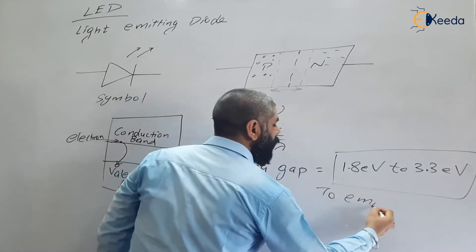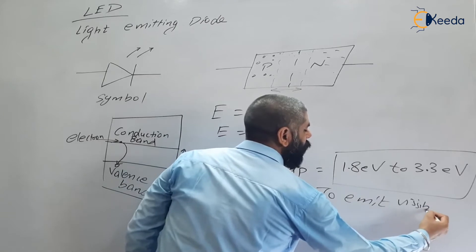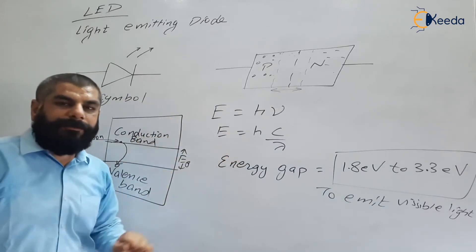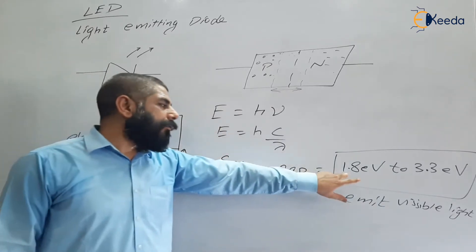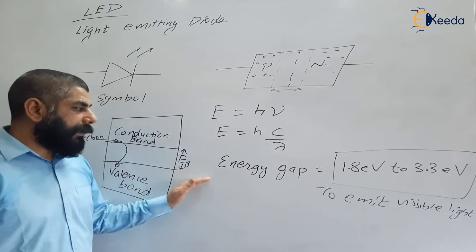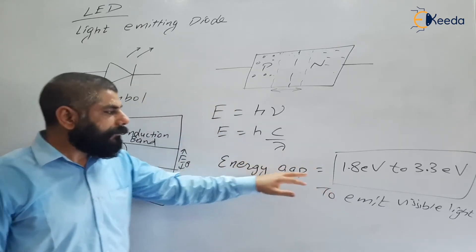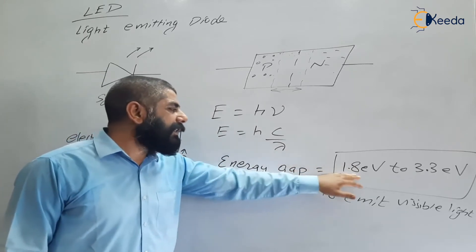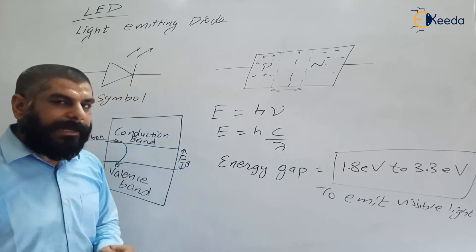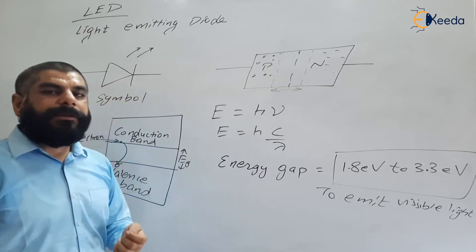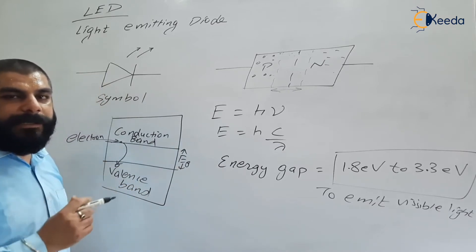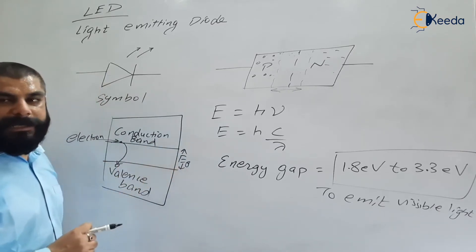To emit visible light, the energy gap should be 1.8 to 3.3 electron volts. If the energy gap is more than 1.1 eV but less than 1.8 eV, then infrared rays will be generated. Gallium arsenide LED has an energy gap less than 1.8 eV and is used to generate infrared rays. This is the LED used in TV remotes.